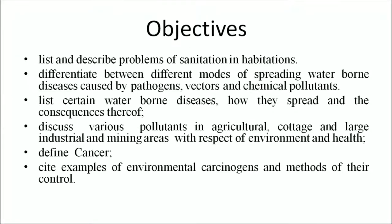During this program we will discuss how the deteriorating environment can affect our health and well-being. The objectives for this lesson are: list and describe problems of sanitation and habitation; differentiate between different modes of spreading waterborne diseases caused by pathogens, reactors and chemical pollutants; list certain vector-borne diseases, how they spread and the consequences. Discuss various pollutants in agriculture, cottage and large industries and mining areas with respect to environment and health. Define cancer, cite examples of environmental carcinogens and methods for their control.